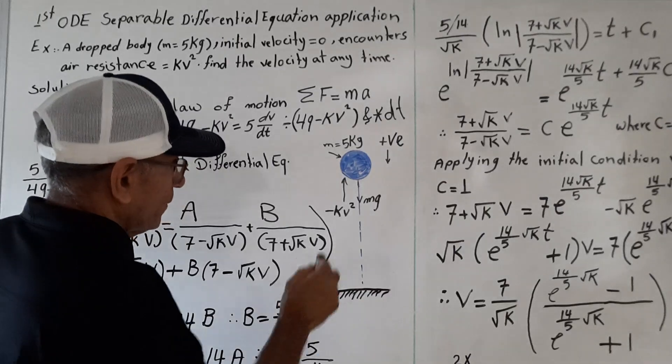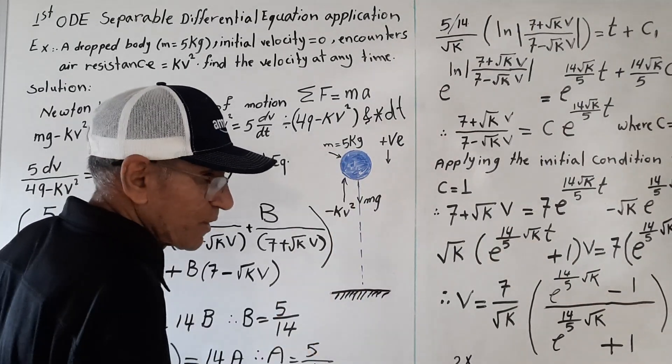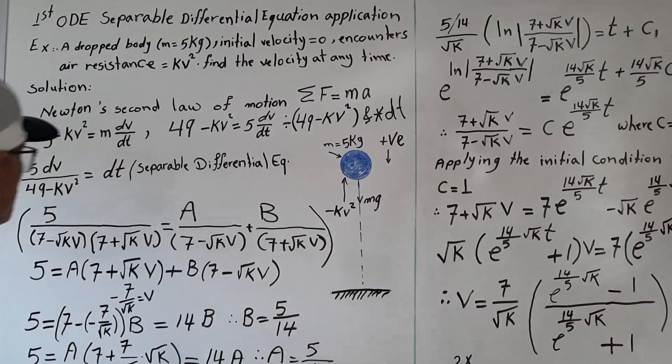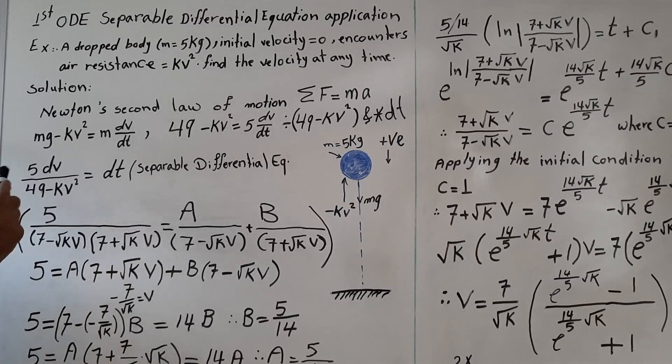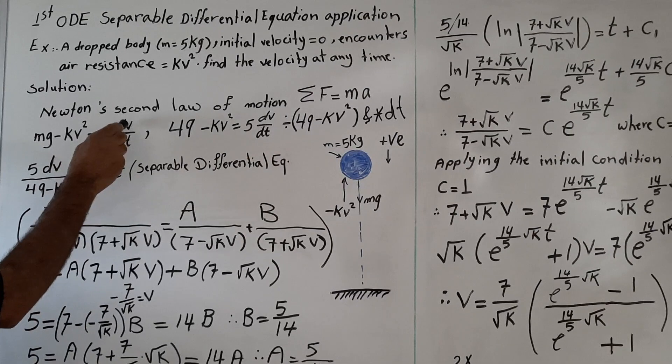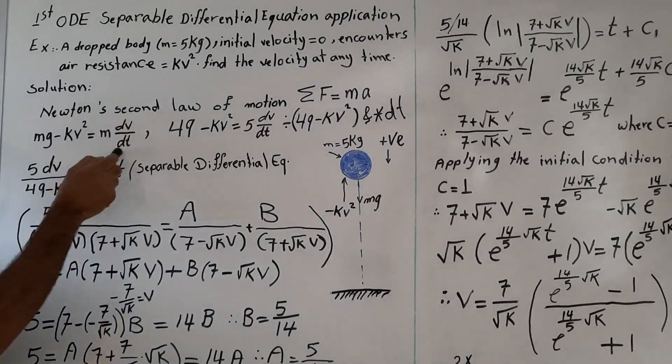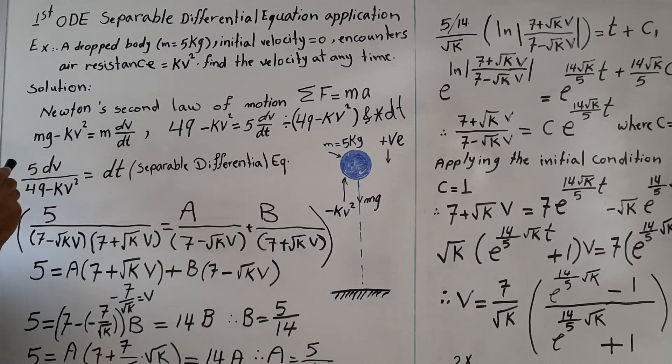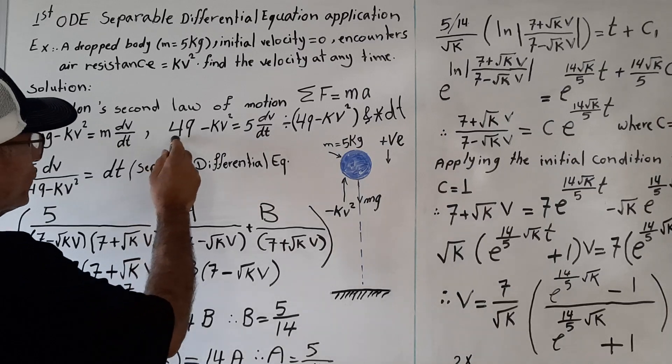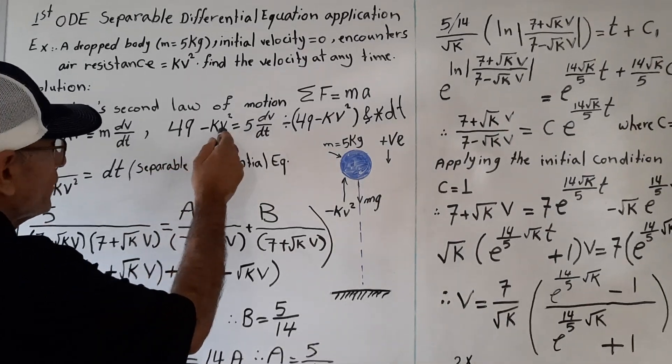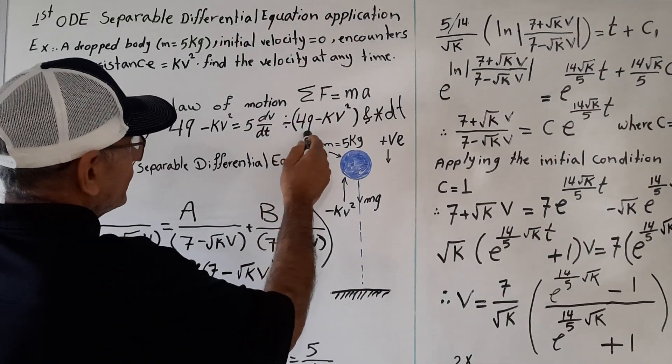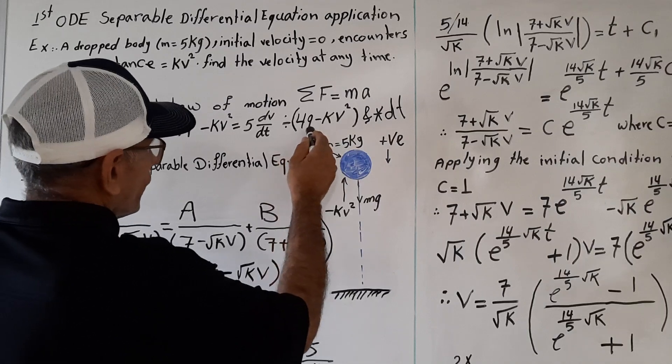Because it is going up, it equals minus kv squared. Its direction is up against the body. Here is our differential equation: mg minus kv squared equals m dv by dt. Here is the ground acceleration 9.8, so 5 times 9.8 gives us 49 minus kv squared equals 5 dv by dt.